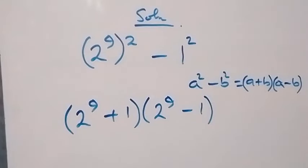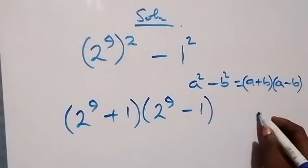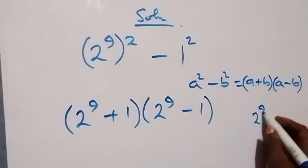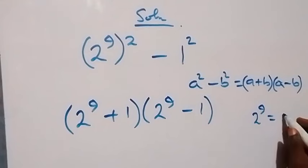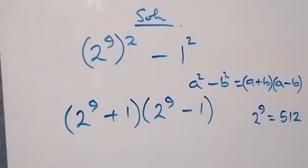Then, here, 2 raised to power 9 is 2 multiplied 9 pieces, which is 512.